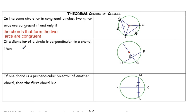The next theorem is that if a diameter of a circle, or even if it's the radius of the circle, is perpendicular to a given chord, then it cuts the chord into two congruent parts. So it bisects the chord, making ED congruent to EF.